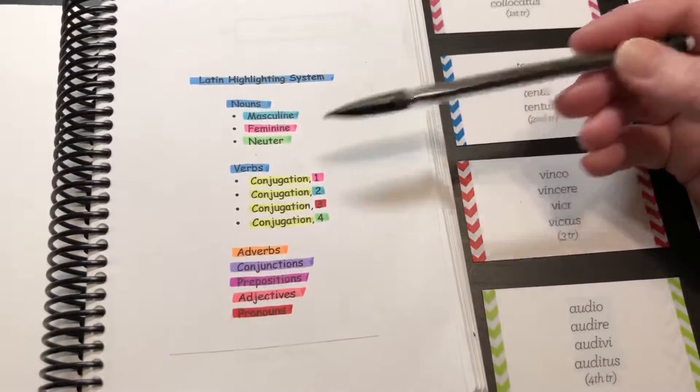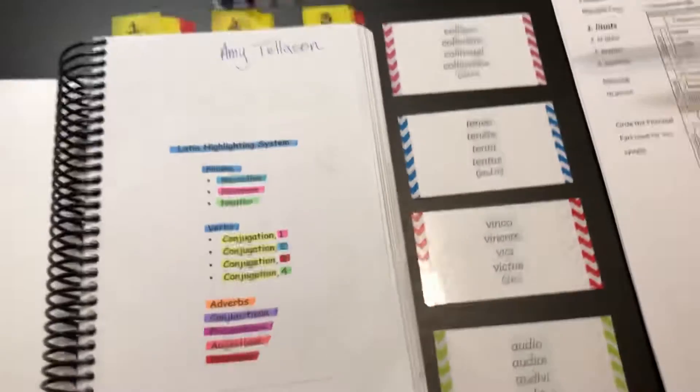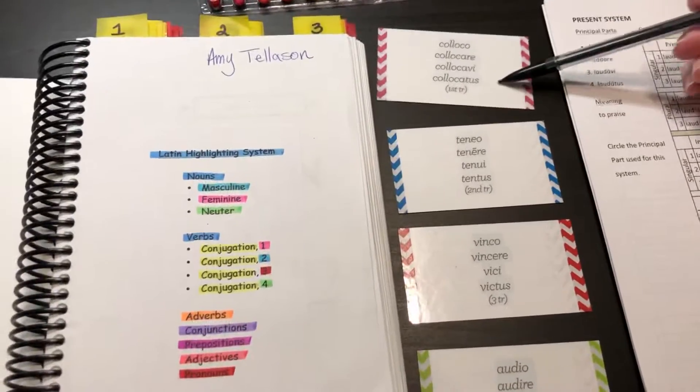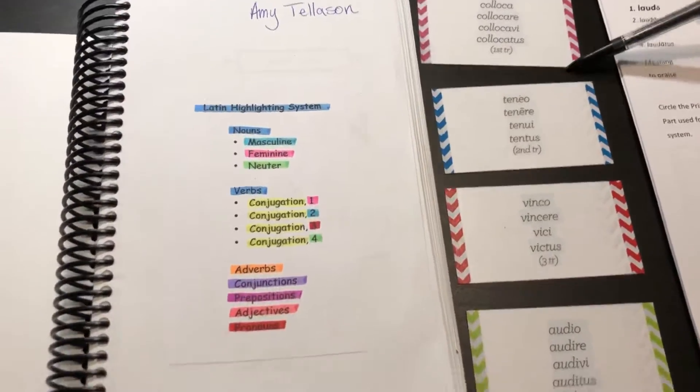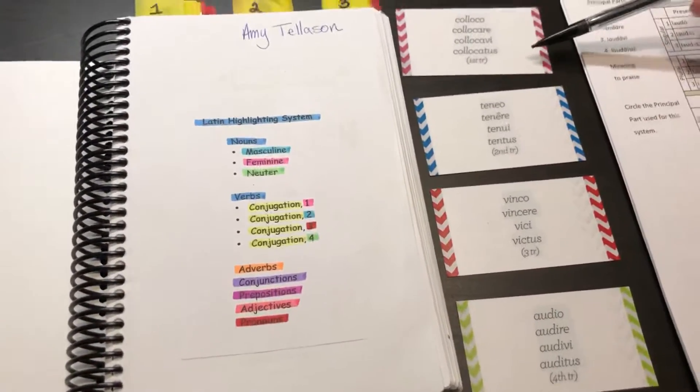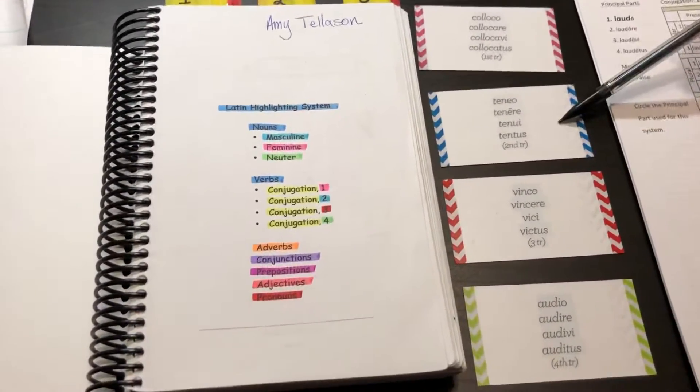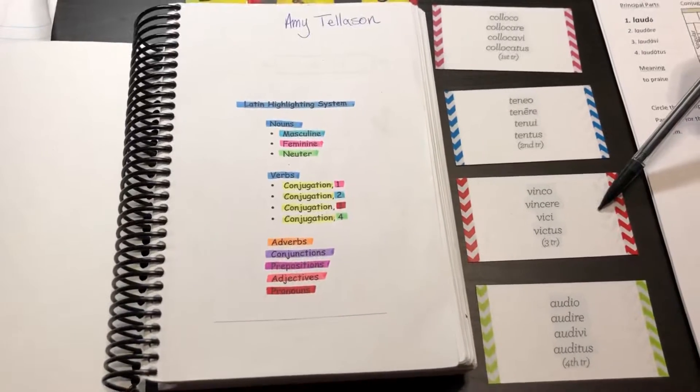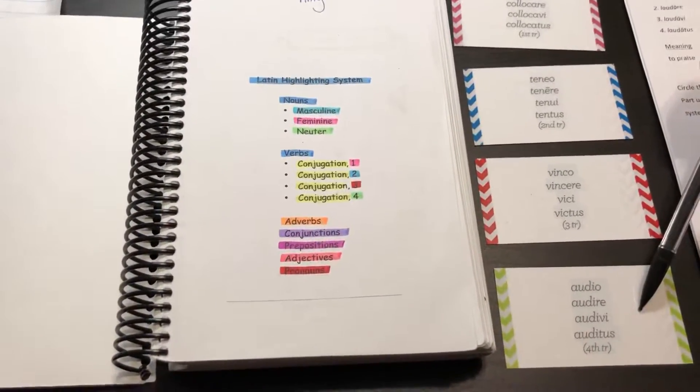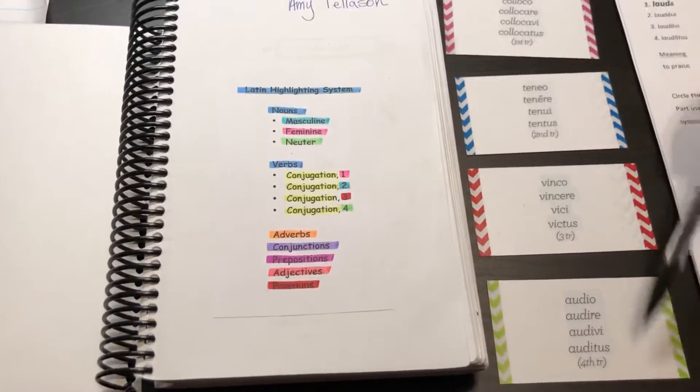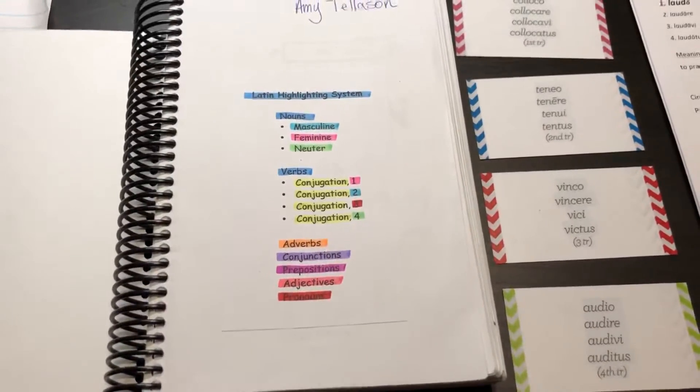Where I came up with the colors: it was based on gender. The conjugations I based off of these flashcards that I have from Antiquated Notions. The first conjugation is pink, second conjugation is blue, third conjugation is red, and fourth conjugation is green. I sort of stuck with that because I had flashcards and that's what I was using.